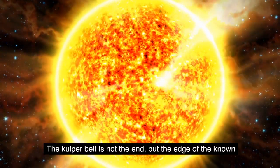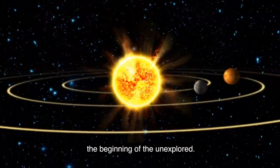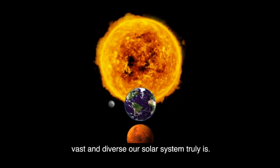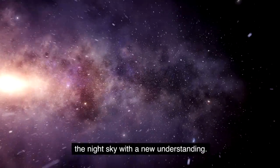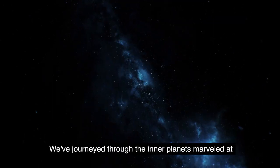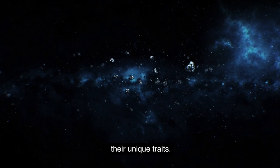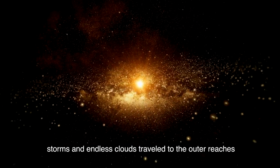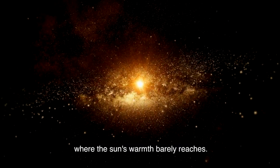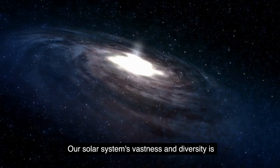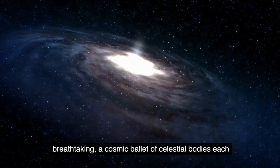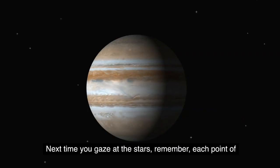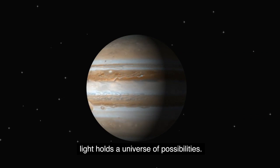The Kuiper belt is not the end, but the edge of the known, the beginning of the unexplored. As we journey back towards Earth we realize just how vast and diverse our solar system truly is. Back on Earth we look up at the night sky with a new understanding. We've journeyed through the inner planets, marveled at their unique traits. We've been awed by the gas giants with their swirling storms and endless clouds, traveled to the outer reaches where the sun's warmth barely reaches. Our solar system's vastness and diversity is breathtaking, a cosmic ballet of celestial bodies each dancing to their own tune. Next time you gaze at the stars, remember, each point of light holds a universe of possibilities.